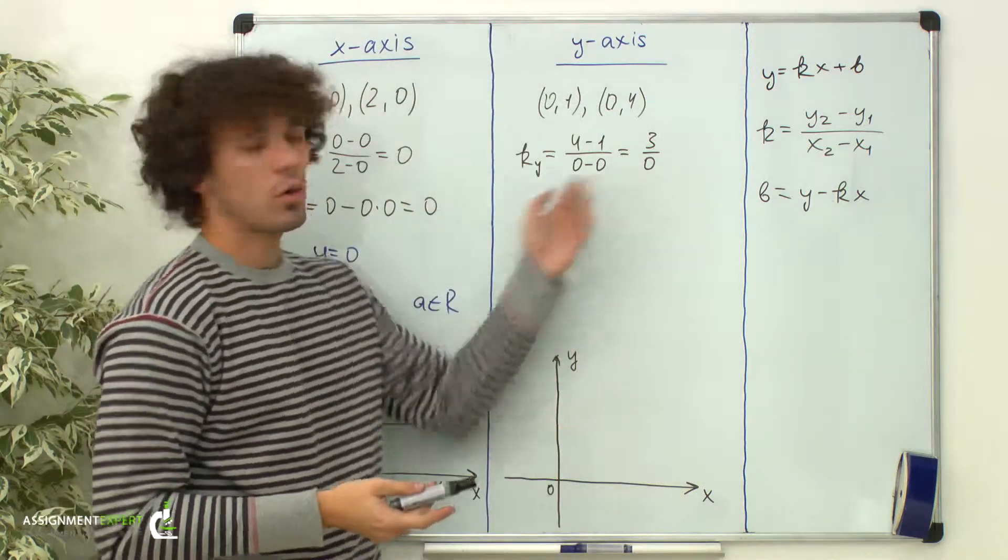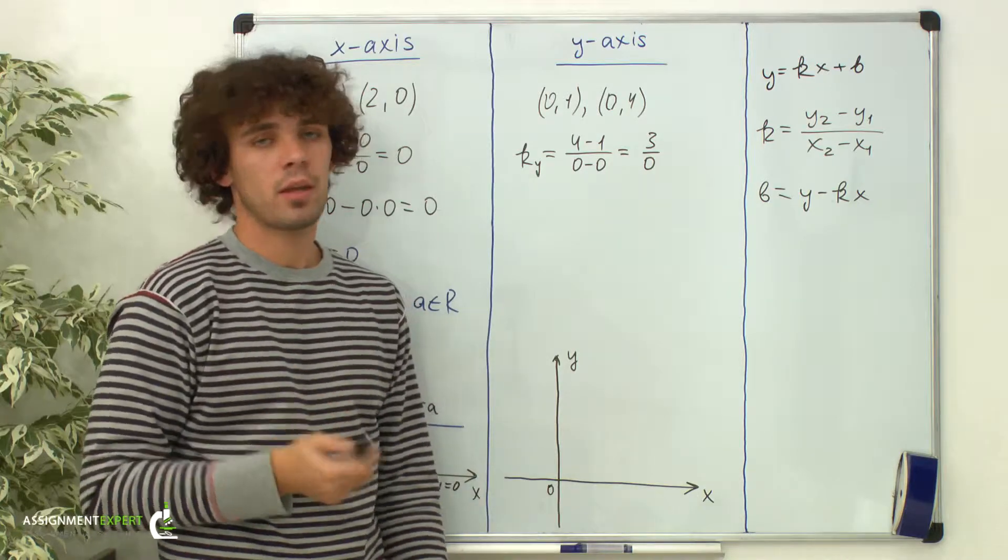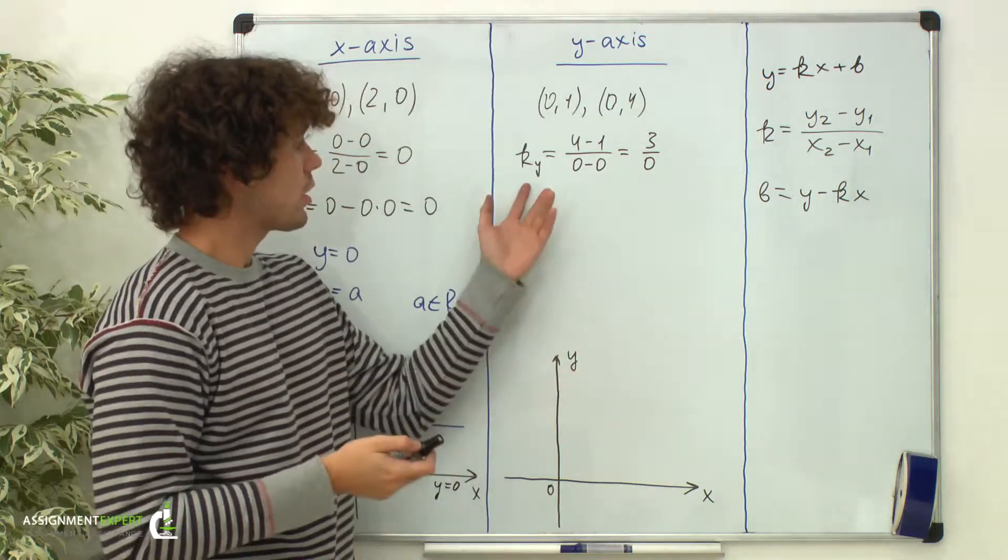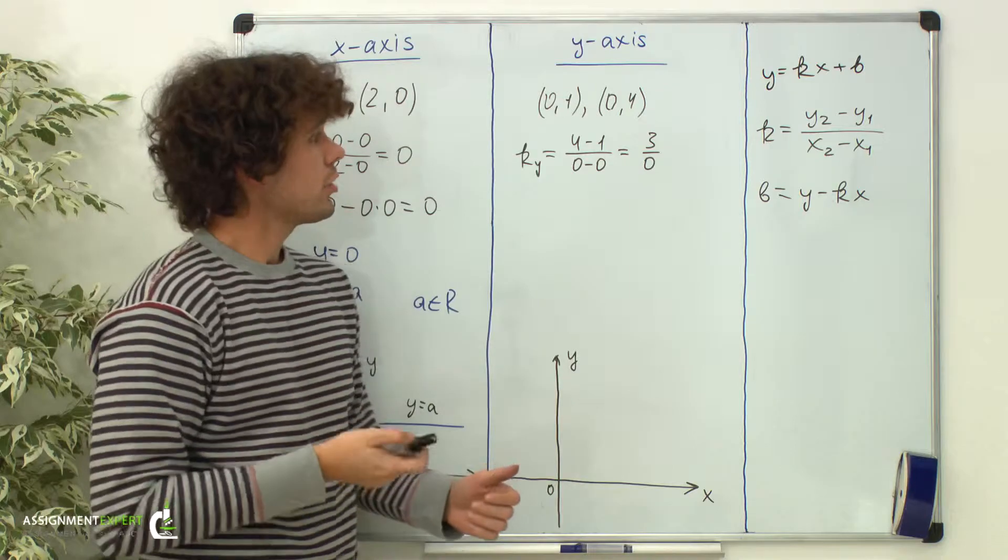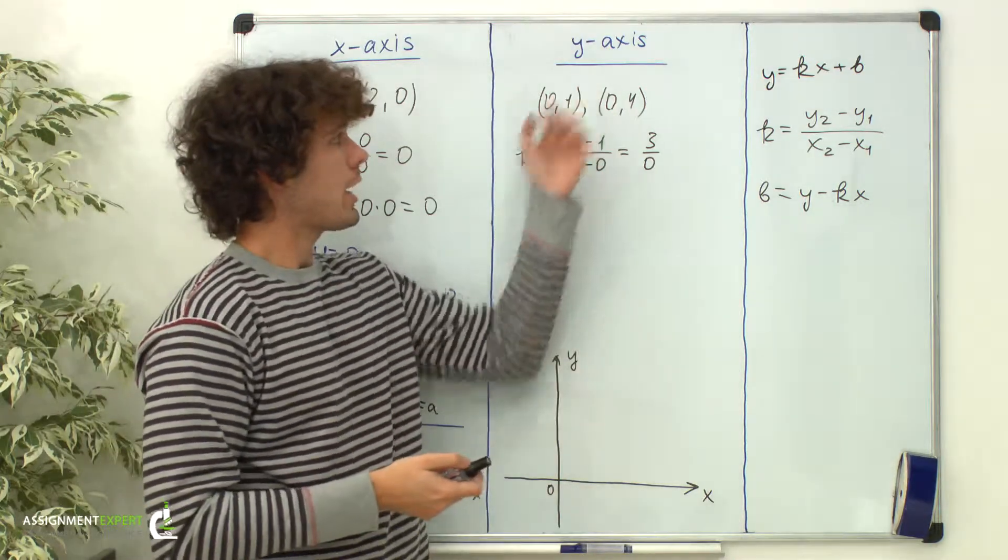As we know, division by 0 is forbidden in elementary math. Therefore, we cannot find the slope in that way. And we cannot write the equation for y-axis.